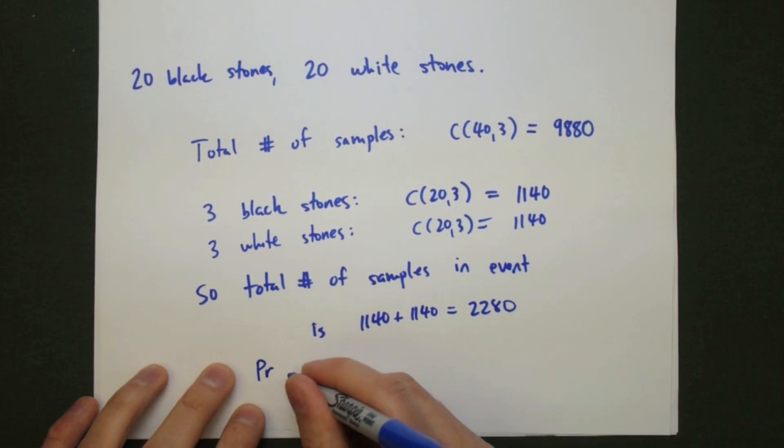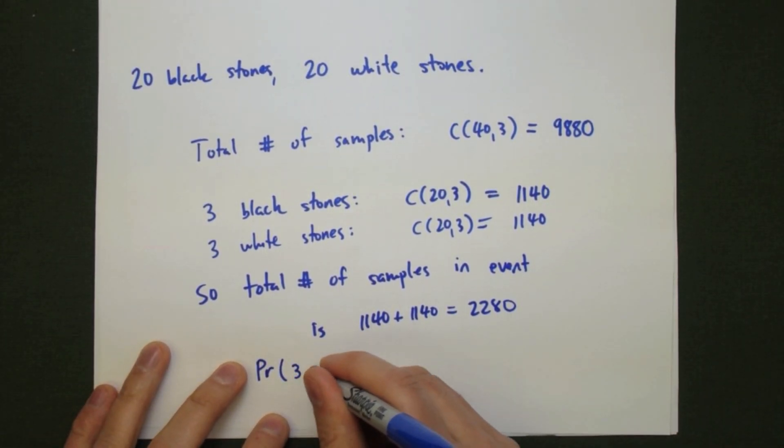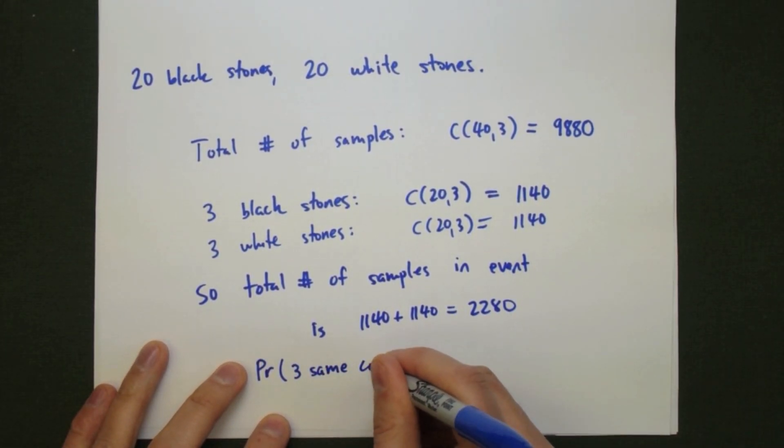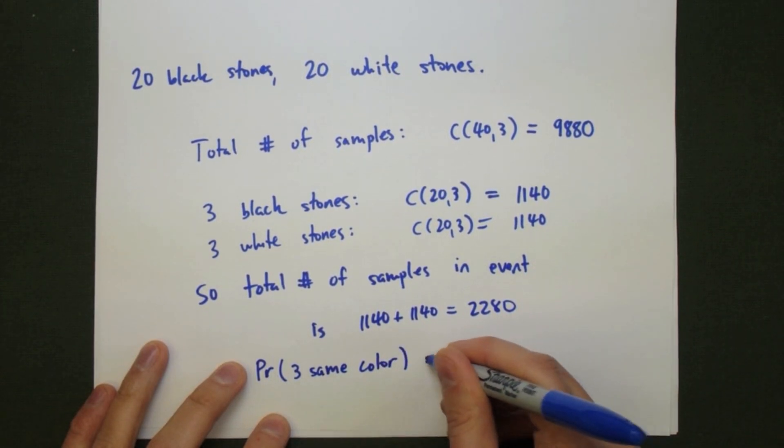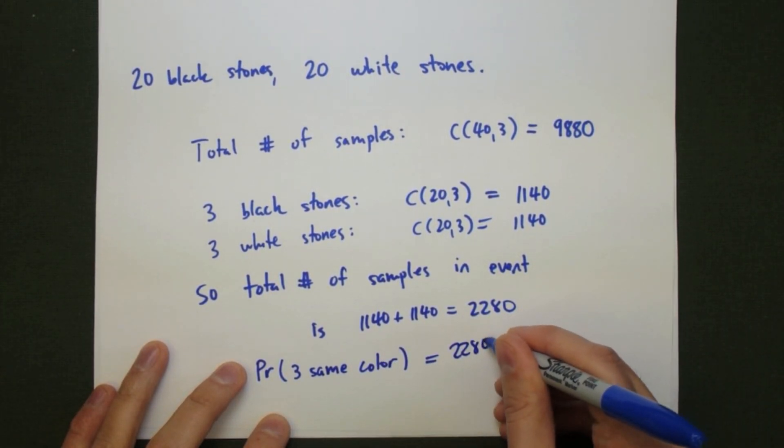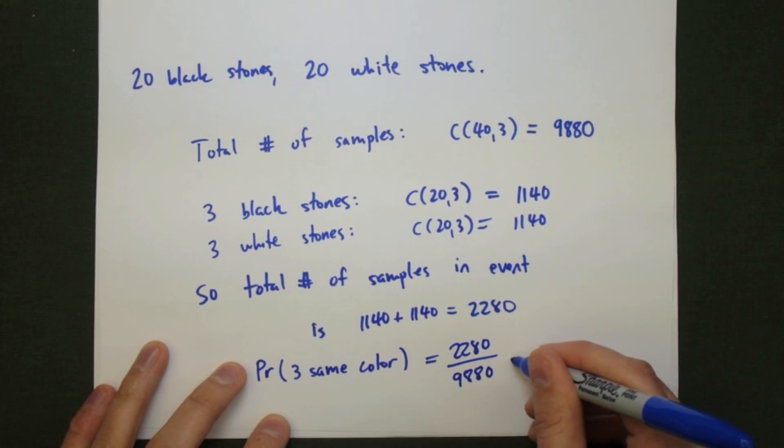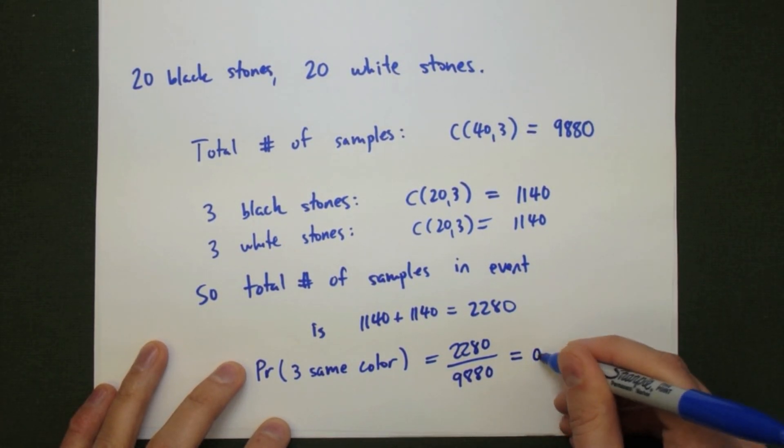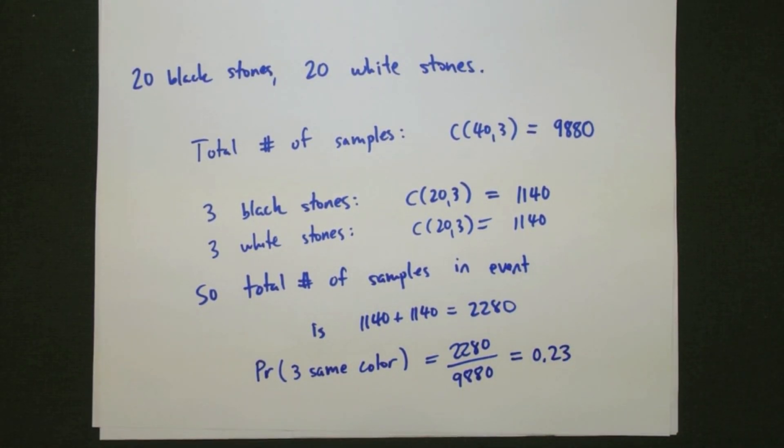The probability then is going to be the number of ways we can satisfy the event or 2,280 divided by the total number of ways we can get a sample which is 9,880. The probability in this case is going to be 0.23 or there's a 23% chance we'll actually get three stones of the same color.